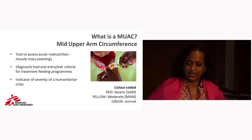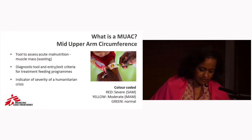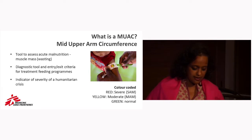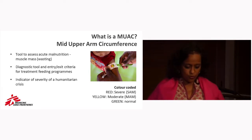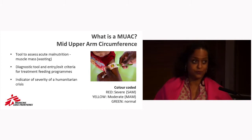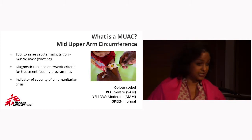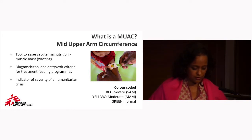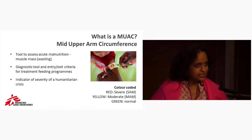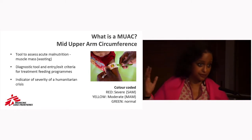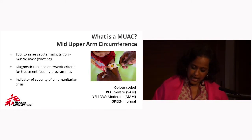So what is MUAC? MUAC is, in essence, a numbered strap wound around the middle of an upper arm, hence called mid-upper arm circumference, typically in children aged six months to 59 months to assess acute malnutrition through muscle mass wasting. It's been increasingly used in the field, in part because it's just a lot easier to carry around than a pair of scales and a meter rule, and it's much easier when children don't stand still.